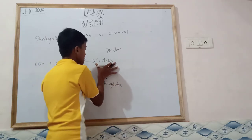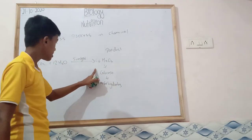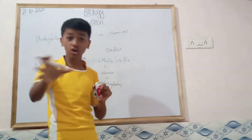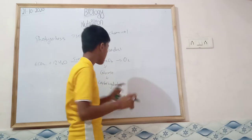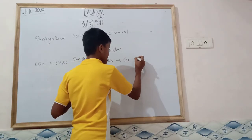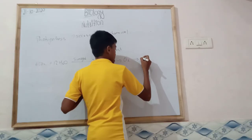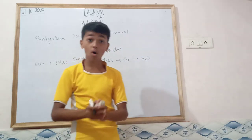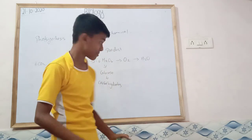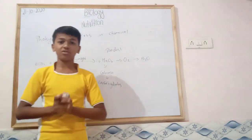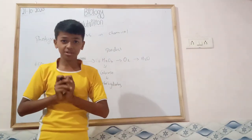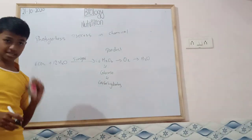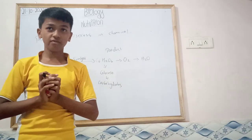C6H12O6 is the product. The second product is O2, meaning oxygen is also produced. The third product is H2O, meaning water is also produced. Thank you for listening. Write this process in your notebook. Thank you for watching.